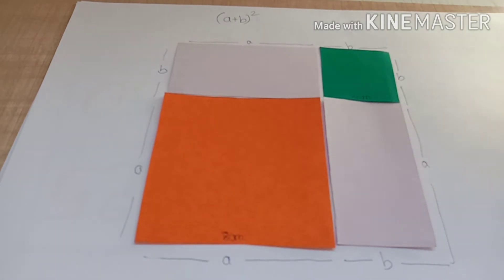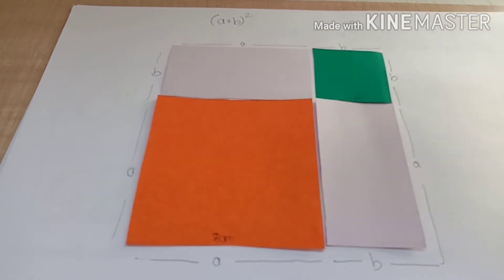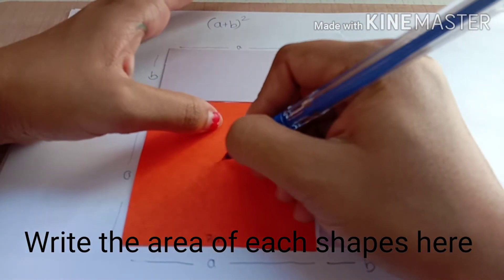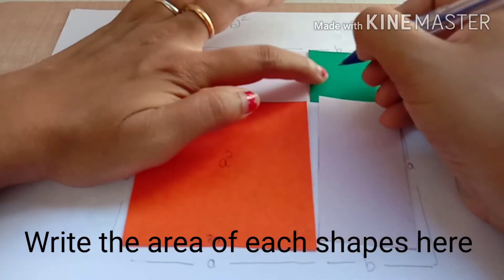Now I have to prove the RHS part. For that I am going to write down the area of each piece. This is a square, this will be a². This is also a square, the green one, this is b².